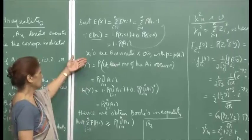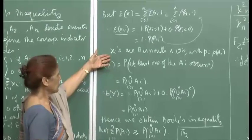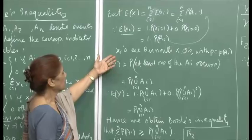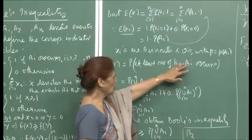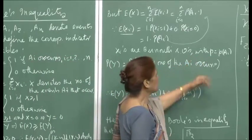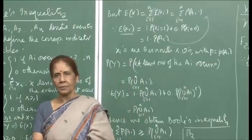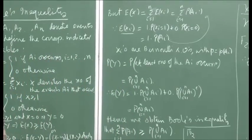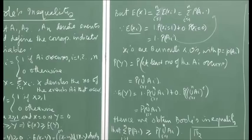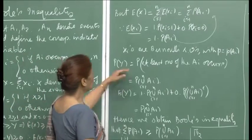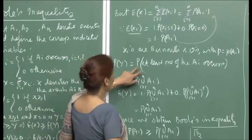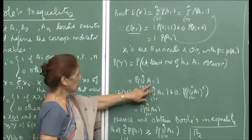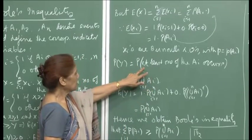So the sum of expectations of Xi equals Σ P(Ai). Note that Xi is a Bernoulli random variable, taking value 1 or 0, with probability of success P(Ai). Now, what is E(Y)? The probability Y = 1 is the probability that at least one of the Ai occurs, which is P(union of Ai, i from 1 to n).